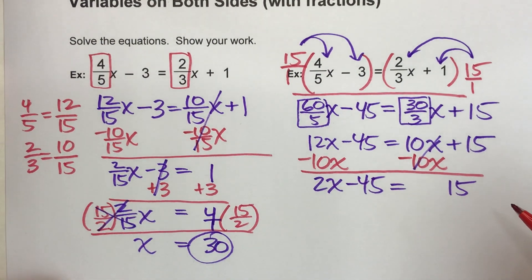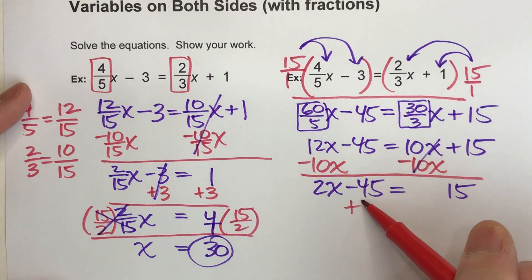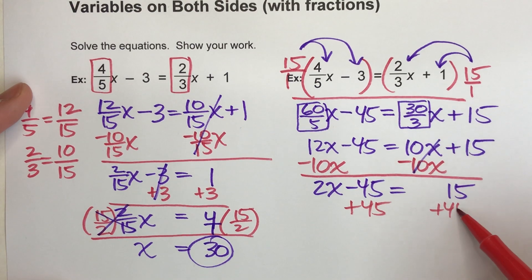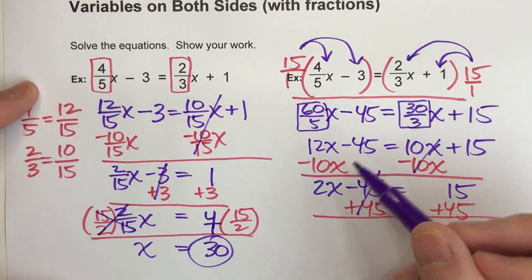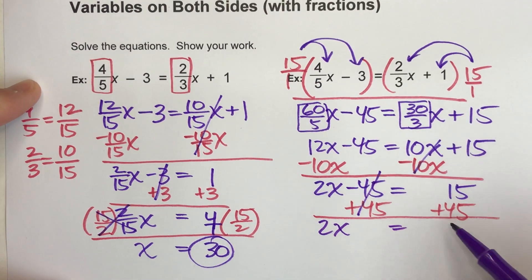Now to undo the minus 45, I'm going to add 45 to both sides. I end up getting, let's see, these undo each other. 2x equals 60.